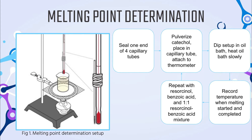This procedure was repeated for the other samples: resorcinol, benzoic acid, and the 1:1 resorcinol-benzoic acid mixture. Benzoic acid is expected to have the highest melting point range due to the presence of a carboxylic acid functional group, then resorcinol due to its two alcohol functional groups in the meta position, while catechol will have a slightly lower melting point due to its two alcohol functional groups in the ortho position. The mixture is expected to have a lower and wider melting point range due to the impurity making the molecule less packed.